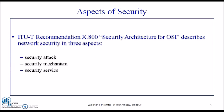In the previous lecture, we have already discussed that the security architecture for OSI describes Network Security in three aspects: Security Attack, Security Mechanism, and Security Services. We have already discussed about Security Attack and Security Services in our previous lecture. In today's session, we will be focusing on the Security Mechanism and Network Model.